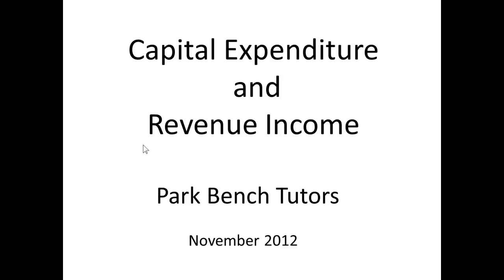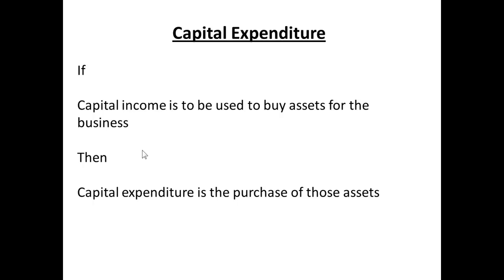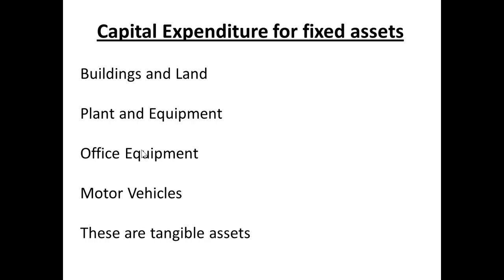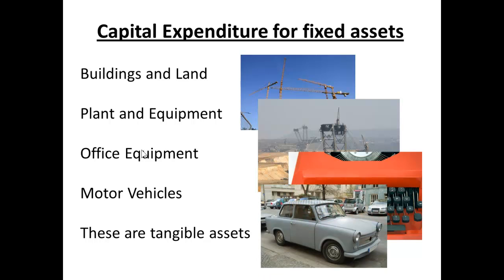Now let's look at capital expenditure. If we have capital income and it is used to buy assets for the business, then capital expenditure must be the purchase of those assets. Capital expenditure for fixed assets refers to expenditure on buildings and land, plant and equipment, office equipment, and motor vehicles. These are all called tangible assets — we can see them and we can touch them.